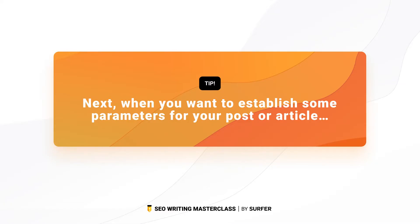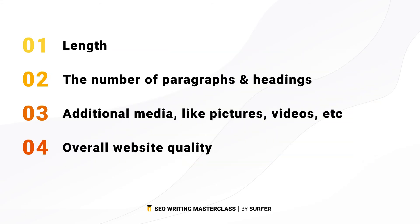When you want to establish parameters for your post or article, you should pay attention to length — you can even copy the articles to a file and calculate the average number of words. You should also pay attention to paragraph length, the number of paragraphs, the number of headings and what keywords they contain, additional media like pictures or videos, and overall website quality — whether or not the article is easy to read and navigate.